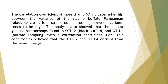The correlation coefficient of more than 0.57 indicates a kinship between the variants of the Swamp Buffalo Pampangan that is relatively close. It is suspected that in-breeding between variants tends to be high. The analysis also showed that the closest genetic relationships were found in variant O-2 (Black Buffalo) and O-4 (Lampung Buffalo), with a correlation coefficient of 0.85. This condition suggests that O-2 and O-4 are derived from the same lineage.